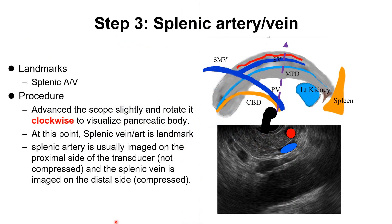Step 3: Splenic artery and vein. Advance the scope slightly, then rotate clockwise, and we can see the pancreatic body and tail area. At this point, the splenic artery and vein are good landmarks. The splenic artery is usually imaged on the proximal side of the transducer and is not easily compressed. The splenic vein is imaged on the distal side and is very easily compressed. Color flow can help identify the splenic artery and vein.